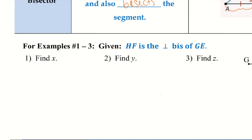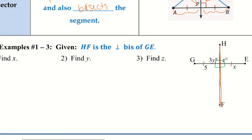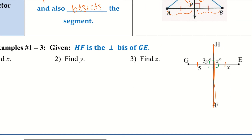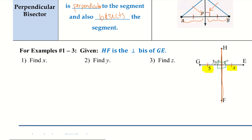Let's try an example. HF is the perpendicular bisector of GE, so HF is bisecting GE, which means these two parts are congruent. Since it's perpendicular, they create 90-degree angles — all four of them. Now, finding X: X is part of that side and five is the only other side I know, and they are congruent to one another because it is being bisected. So X equals five.